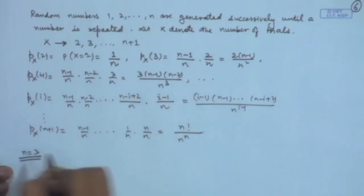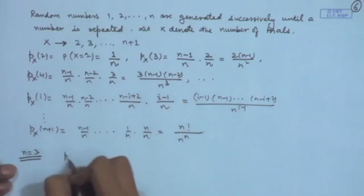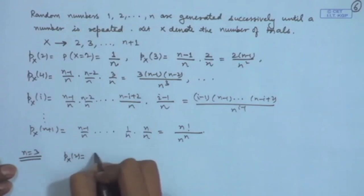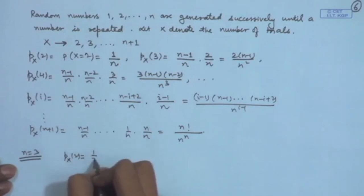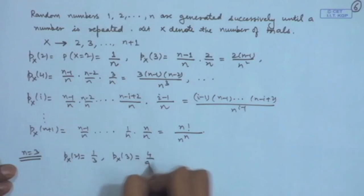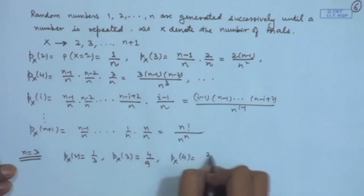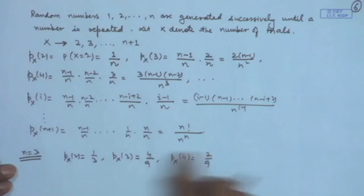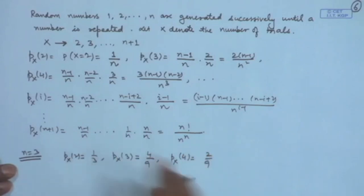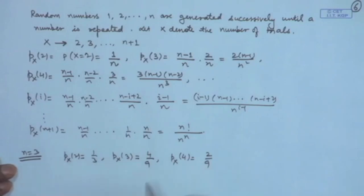For n=3: P(x=2) = 1/3, P(x=3) = 4/9, P(x=4) = 2/9. Adding these: 1/3 + 4/9 + 2/9 = 3/9 + 4/9 + 2/9 = 9/9 = 1. This is a valid probability mass function.